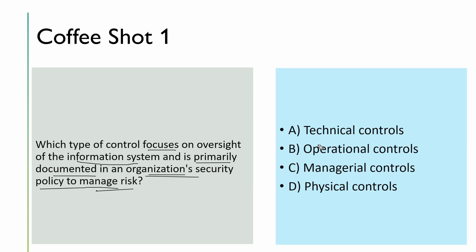Option A is technical control. Technical control is basically hardware, software, and firmware used to reduce risk. For example, we have a system and we install antivirus, which protects the system from viruses — that is a technical function trying to protect the system. We also install a firewall, which is technical in nature — it inspects packets and blocks them.